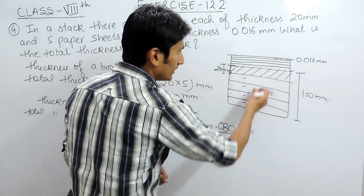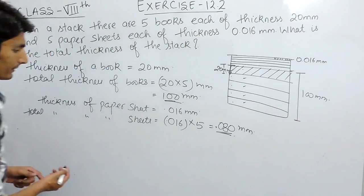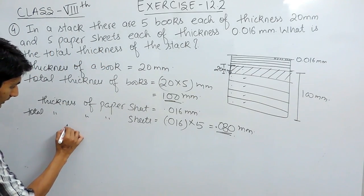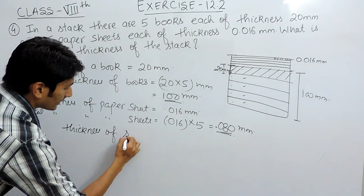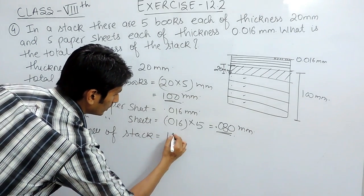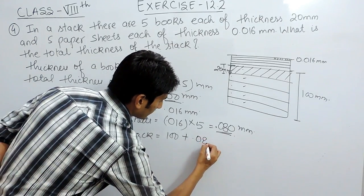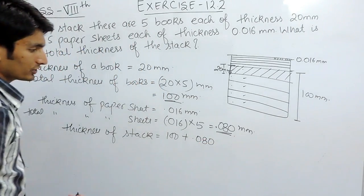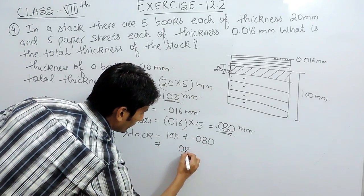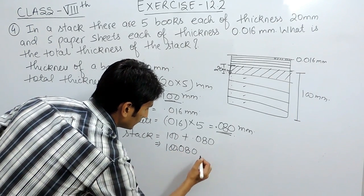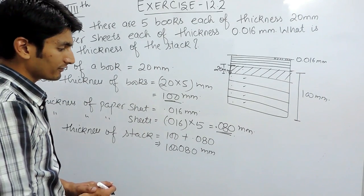Now to find the total thickness of the stack, add the thickness of the books and the thickness of the paper sheets. The total thickness equals the thickness of the books plus the thickness of the paper sheets, which is 100 mm plus 0.080 mm, giving us 100.080 mm.